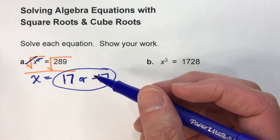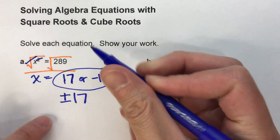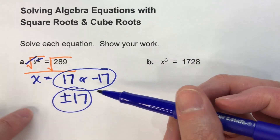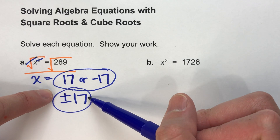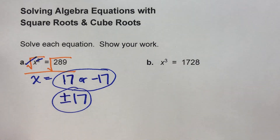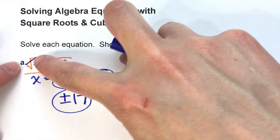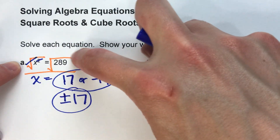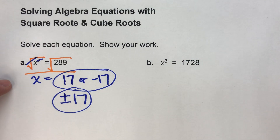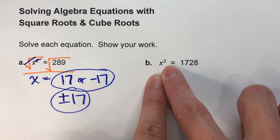You can use the plus or minus symbol — a plus sign with a minus sign underneath it — which means positive 17 or negative 17. It means the exact same thing. So whenever you're undoing x squared in an algebra equation, remember there are two possible answers.